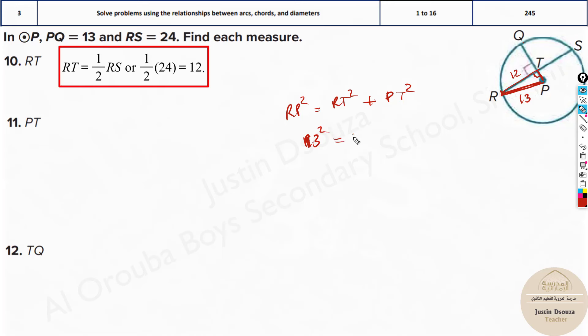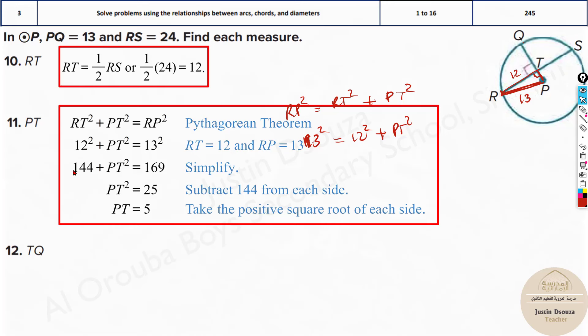13² equals 12² plus PT². Now this is a Pythagorean triplet, if you remember, 5, 12, 13 are a Pythagorean triplet. So hypotenuse is 13², this is 12², this is 5². The answer will be 5. But otherwise you can just solve this in calculator, you will get the answer 5.